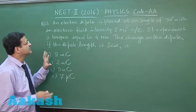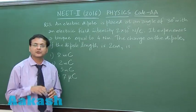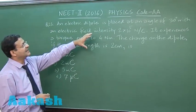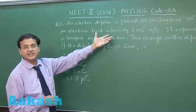Now this question 23 is a straightforward question based on torque acting on an electric dipole. It says that an electric dipole is placed at an angle of 30 degrees with an electric field intensity which is given.